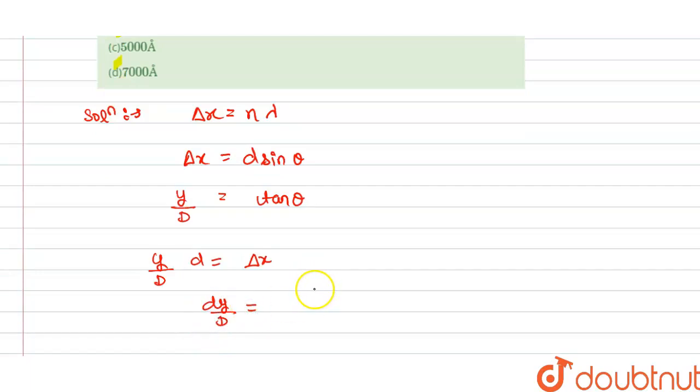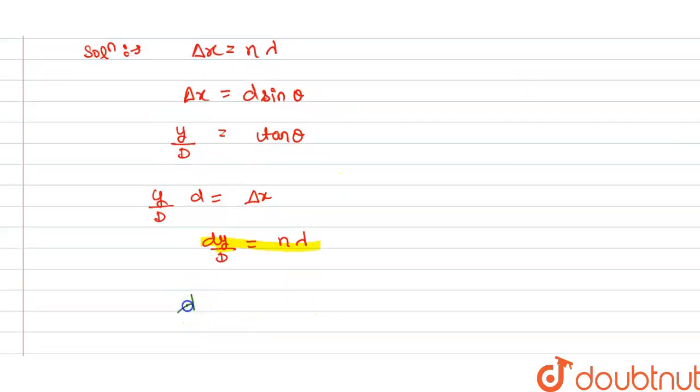...equals nλ. So this is the relation between x and y, and we know that wavelength λ is dy divided by nD.